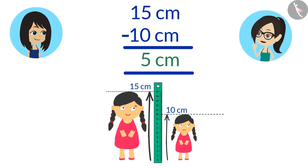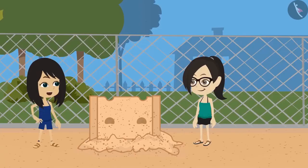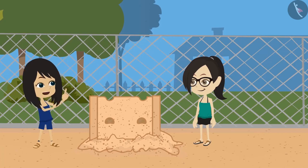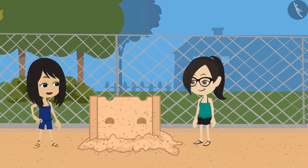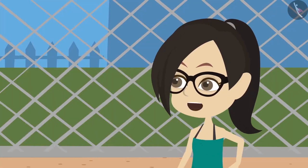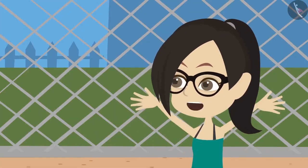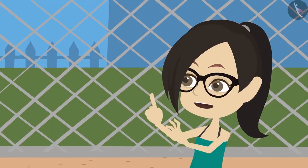That means your doll is 5 centimeters shorter than my doll. Now if I want to get a doll which is the same size as that of your doll, then I have to buy a doll of 15 centimeters. And if you want to buy a doll taller than my doll, then you have to buy a doll taller than 15 centimeters.